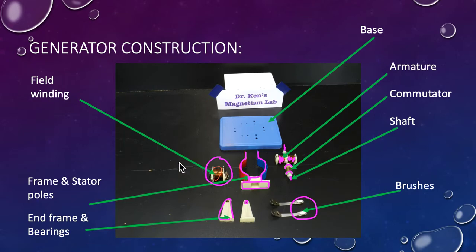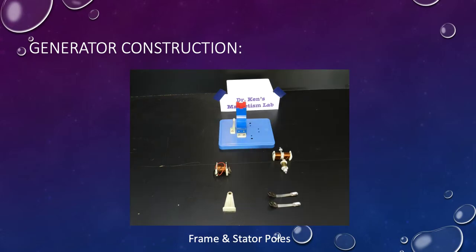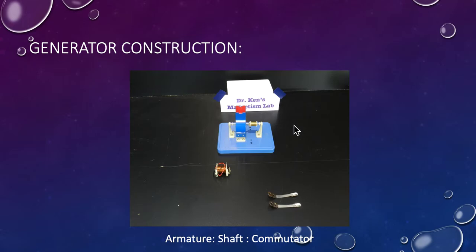Let's see how my generator is put together. First I've put one end onto the base, very simple start with the base and the one end bearing. Next I've put into place my stator or frame. Next step is to put the armature shaft and commutator in place. You can't see much of the armature itself but you can see the shaft running through here and the commutator here on the end. I'll show you a better picture of that before too long.